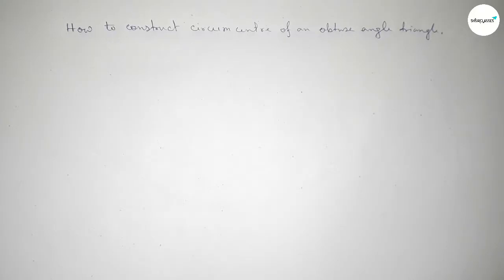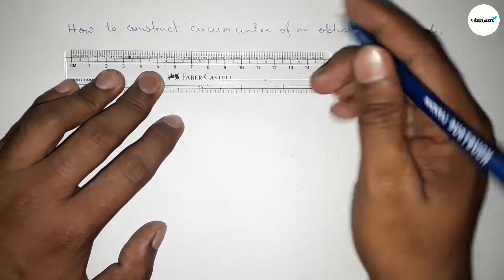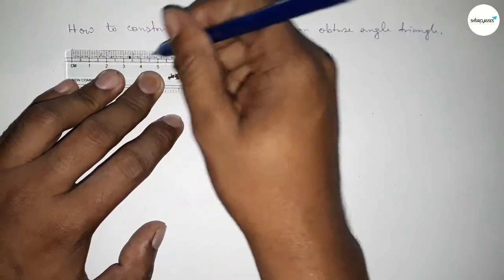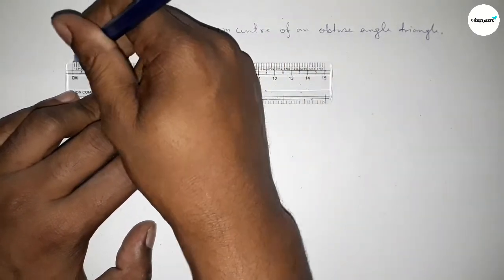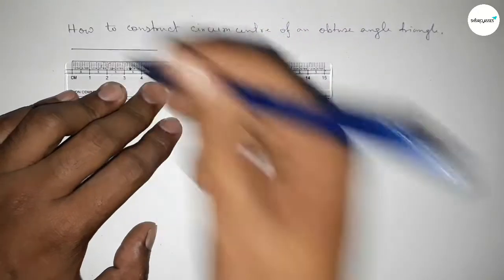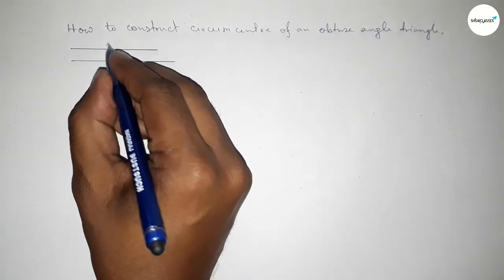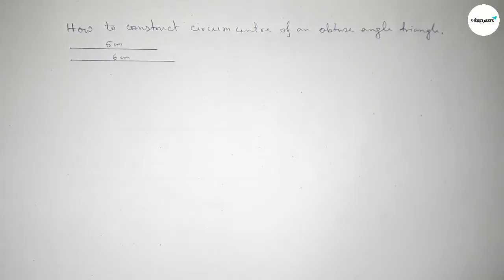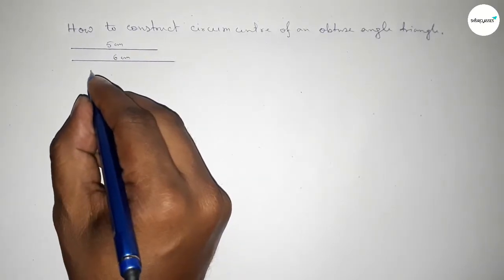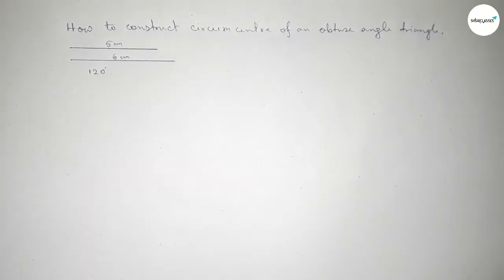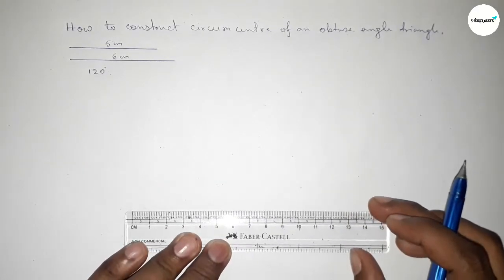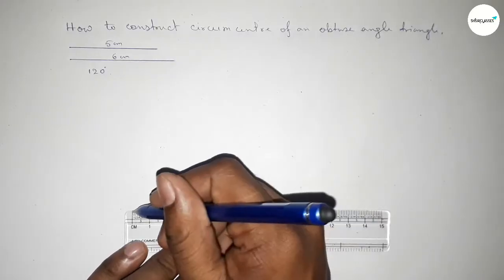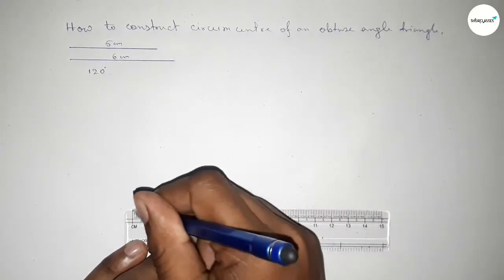First drawing an obtuse angle triangle — taking here a line of length 5 centimeter and drawing another line of length 6 centimeter. So this one is 5 centimeter and this one is 6 centimeter. Next taking a 120 degree angle, which is greater than 90 degree, and drawing a line of length 6 centimeter.